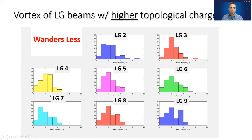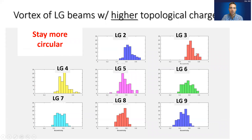Our conclusions are that beams with higher topological charges have vortices that are more stable in the face of optical turbulence, and that shows up in a few different ways. This plot shows the beam wander of the different beams: as we move from charge 2 up to charge 9, those beams tend to move around less — on average, charge 9 moves about 5 pixels, whereas the lower-order charges move on the order of 7 or 8 pixels. The vortices also tend to stay more circular for higher topological charges; beam 9 is closer to a perfect circle, while lower-order beams show higher eccentricity or elongation.